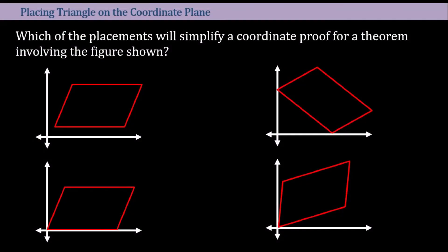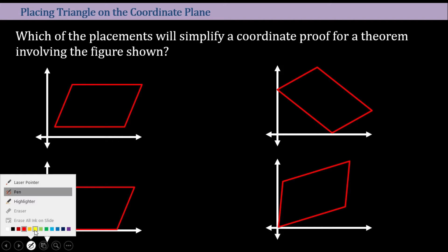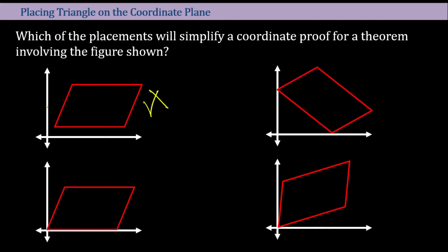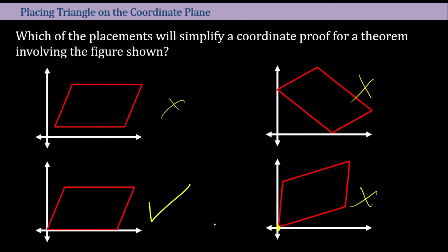I have here four figures on how to place quadrilaterals on the Cartesian plane. Think of which figure shows the best way to make the computation or the proof the simplest. If you choose this first one, it doesn't follow the guidelines — no vertex is placed on the origin and no side is placed on an axis. This one is not fit as well, nor is this one, because although one vertex is placed on the origin, there is no side placed on the axis. This last one is the best way to place this quadrilateral in the Cartesian plane.